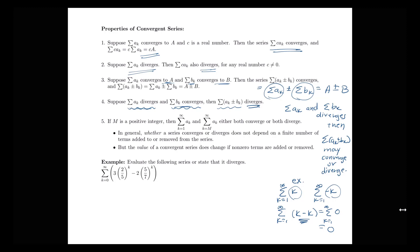The last property talks about what happens when we change the starting index at the bottom. If m is a positive integer, then the sum from k equals one to infinity of a sub k and the sum from k equals m — thinking of m as just any other starting index, 2, 3, 5, 10, whatever you want — those two sums either both converge or both diverge. What this is saying is that whether a series converges or diverges does not depend on a finite number of terms added or removed from the series, and that's not going to change the overall behavior.